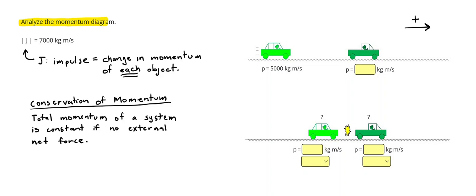Now let's start off with a few definitions. So the first one is J. J stands for impulse, and that's the change in momentum of each object. Basically, however much momentum one object loses or one object gains.